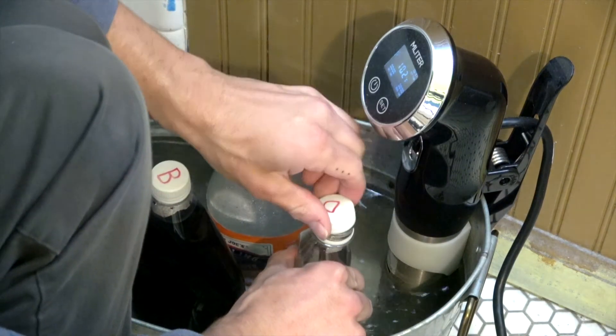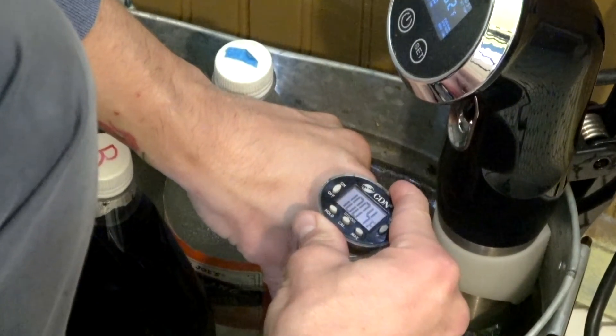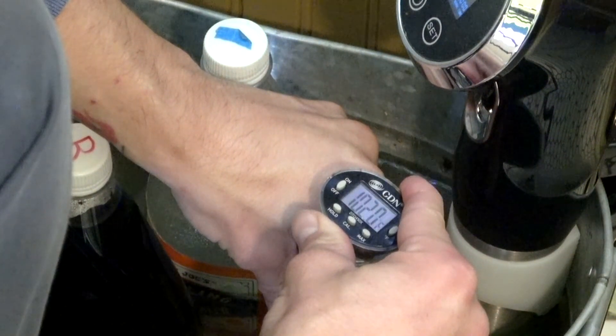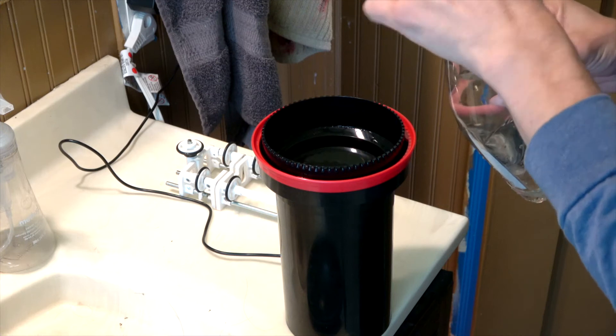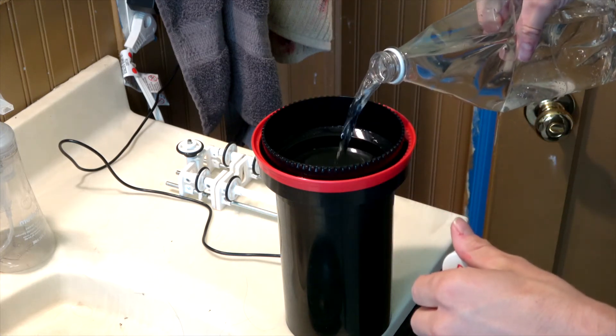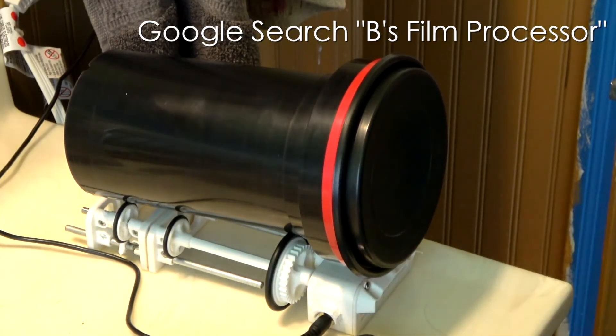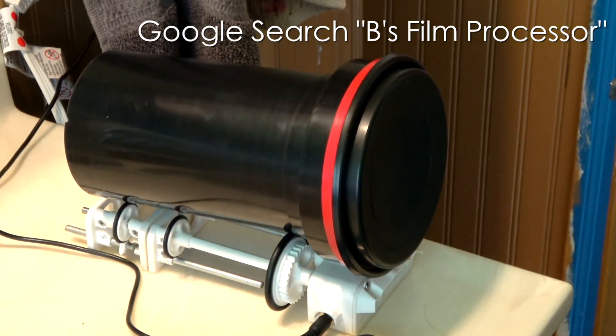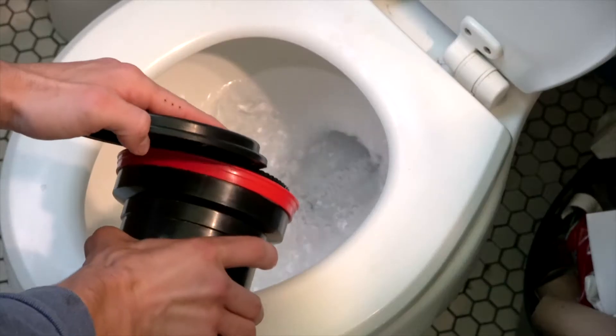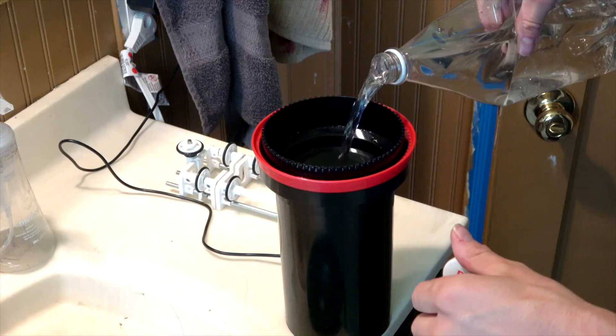So now I'll check the temperature on my developer and make sure that it's at 102 degrees. Bam, we nailed it. Awesome. Pour in your pre-wash and agitate. I use a rotary processor which turns the tank so I don't have to do inversions, but inverting the tank works just fine. Pour your pre-wash down the drain.